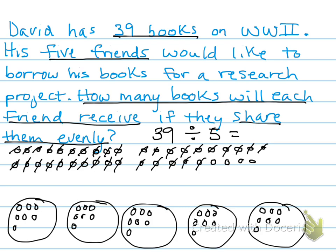Let's look back at our problem: 39 divided by 5. The quotient is how many counters are in each circle. There are 7 counters in each circle. How many remainders are there outside of the circle? 1, 2, 3, 4. Four remainders.